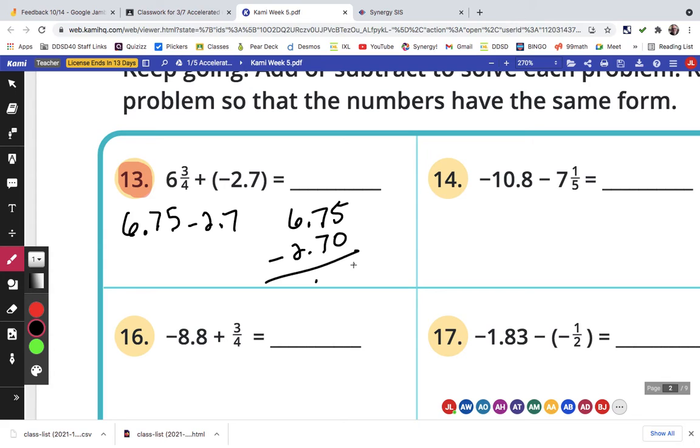5 minus 0 is 5. 7 minus 7 is 0. 6 minus 2 is 4. So that is 4 and 5 hundredths.